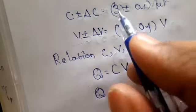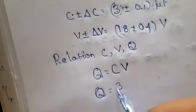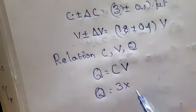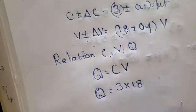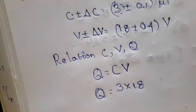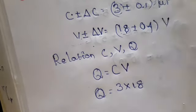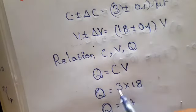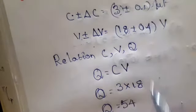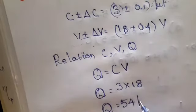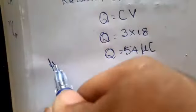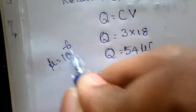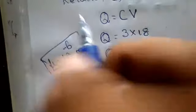Q equals, what is C? 3 into, what is V? 18. What will be the answer? Q equals 54. What is the unit of capacitance? Microcoulomb. What is the value of mu? Mu equals 10 to the power minus 6.